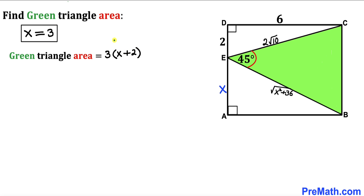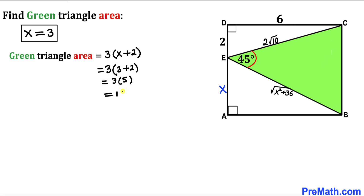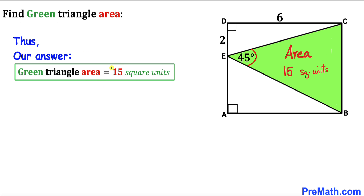Recalling that the green triangle area is 3(x + 2), we substitute x = 3: area equals 3 times (3 + 2) equals 15 square units. Thus the area of green triangle BEC is 15 square units.